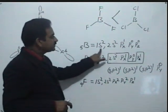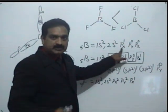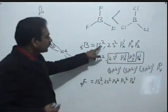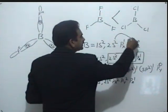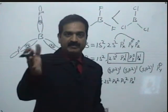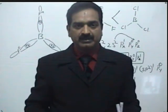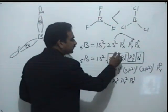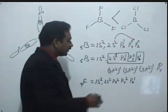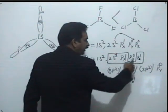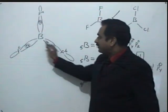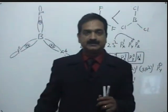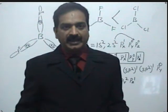In boron, the ground state configuration is 1s2, 2s2, 2px1. In the excited state, the configuration becomes 1s2, 2s1, 2px1, 2pz1 — one electron from 2s is excited to 2p. Since px, py, and pz are degenerate orbitals with the same energy level, the electron can be excited to py or pz. The 2s and two 2p orbitals hybridize to give three sp2 hybrid orbitals oriented at 120°, making BF3 trigonal planar.